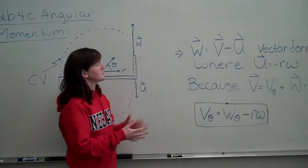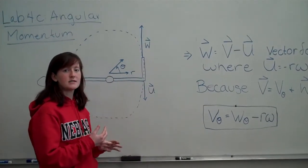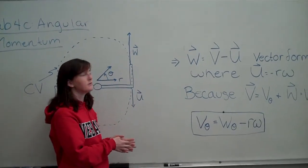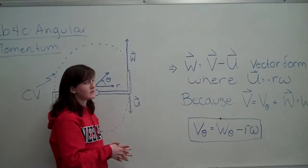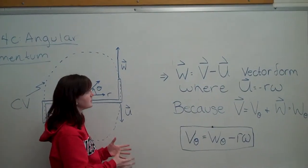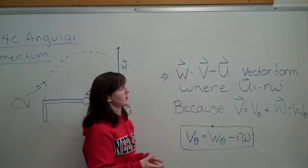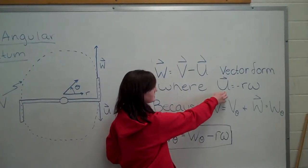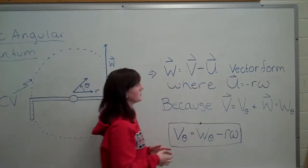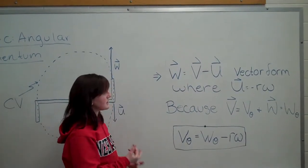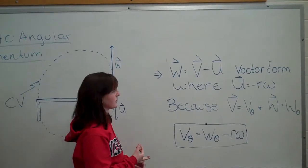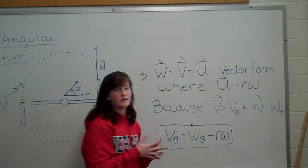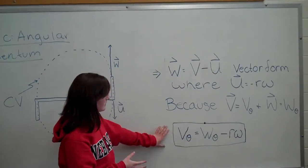This is vector notation for the absolute, the relative, and the control volume velocity. U is the velocity of the nozzle. W is the velocity of the water jet relative to the nozzle. And V is the absolute velocity of the water as it leaves the jet. Because U is equal to negative angular velocity times the radius of the sprinkler, and because V and W are both in the theta direction, we can set up this equation.